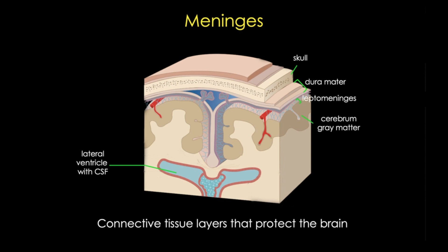Think of the top piece of bread as the arachnoid mater, whose outer surface is adjacent to the dura. Thin parts of its inner surface protrude in almost finger-like projections called trabeculae, which contact the pia mater. The space between those trabeculae is called the subarachnoid space, and it fills with CSF, which flows down to the spinal cord, up to the top of the brain, and eventually returns to the blood through protrusions of the arachnoid called arachnoid villi.